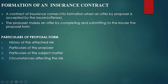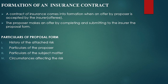Formation of an insurance contract: a contract of insurance comes into formation when an offer by a proposer is accepted by the insurer who is the offeree. The proposer is the insured and the offeree is the insurer. The proposer makes an offer by completing and submitting the proposal form to the insurer. Some particulars of the proposal form include the history of the attached risk, particulars of the proposer, description of the subject matter, and circumstances affecting the risk.